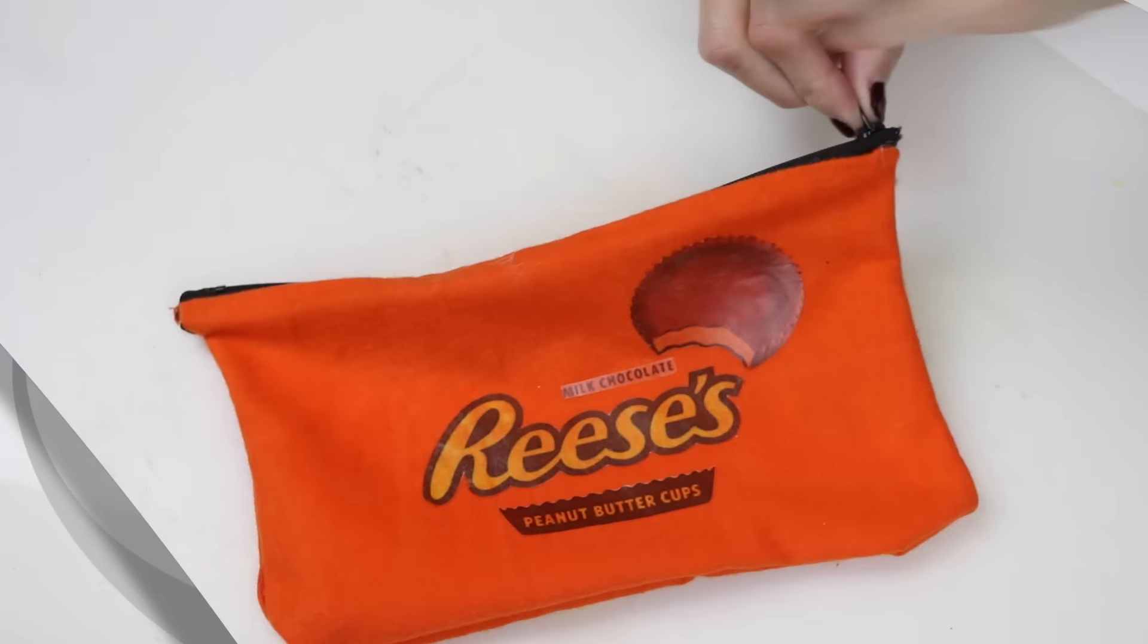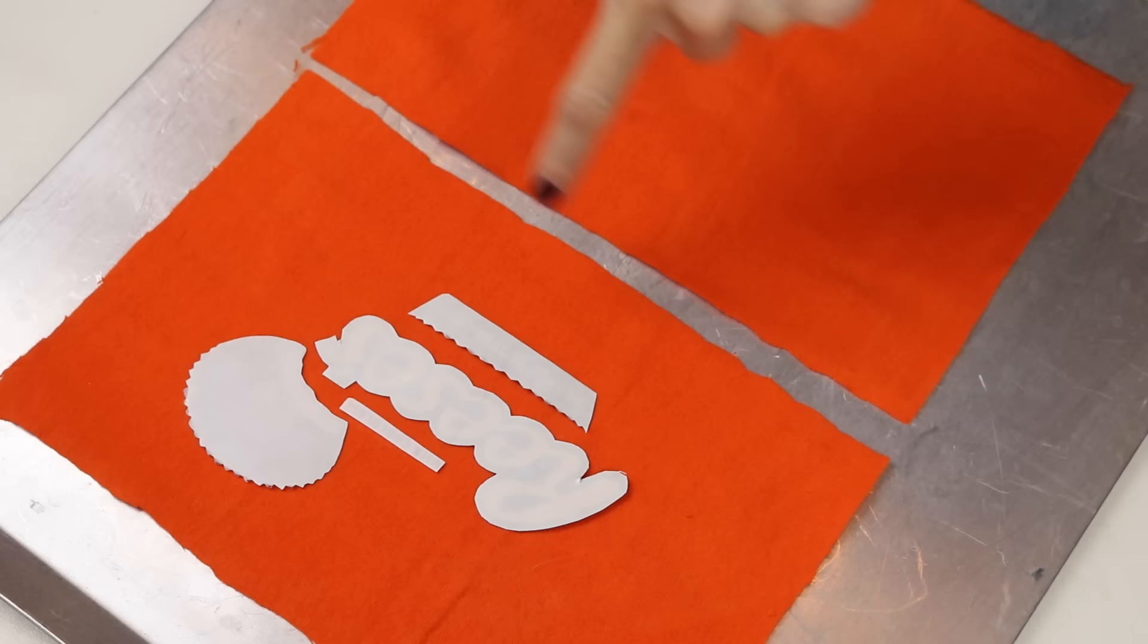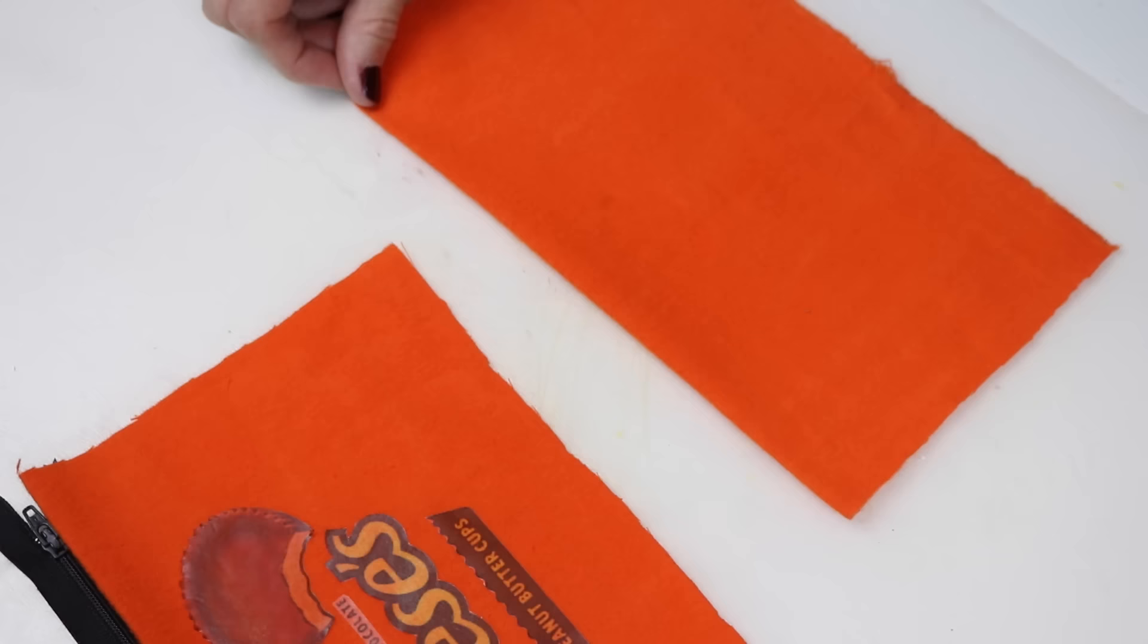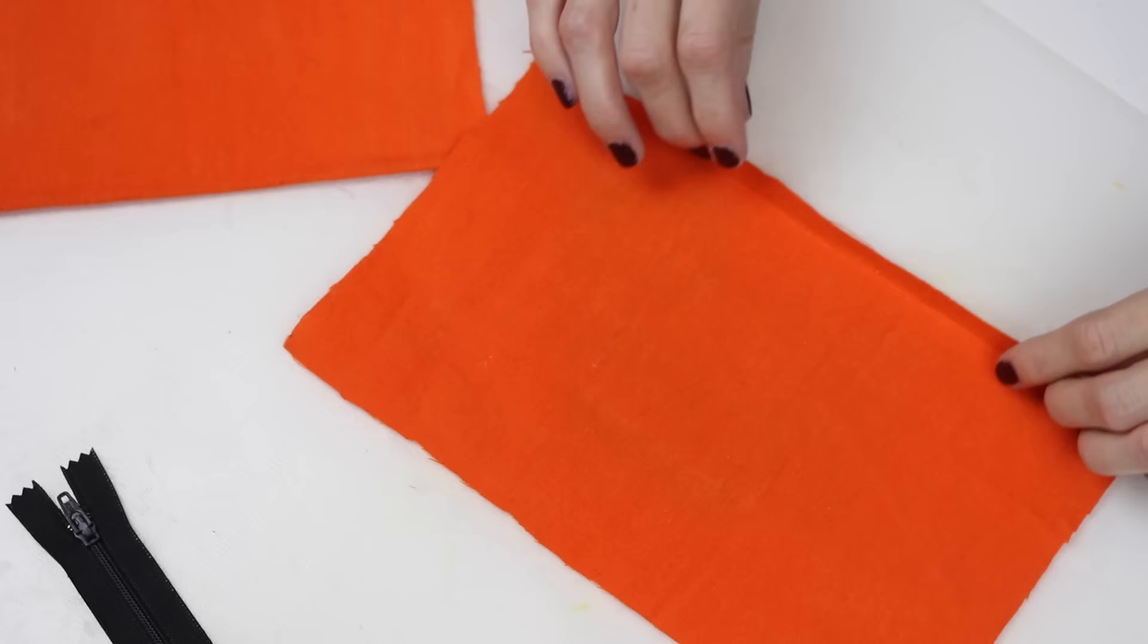You will need the inkjet transfer paper and some orange fabric. You will need a 9 by 12 sheet of orange fabric cut in half and transfer paper cut out like you see here. Iron the transfer on according to the package instructions. Now fold in the edges like we did before to give a crisp and clean look to the edges. Do that on both pieces.